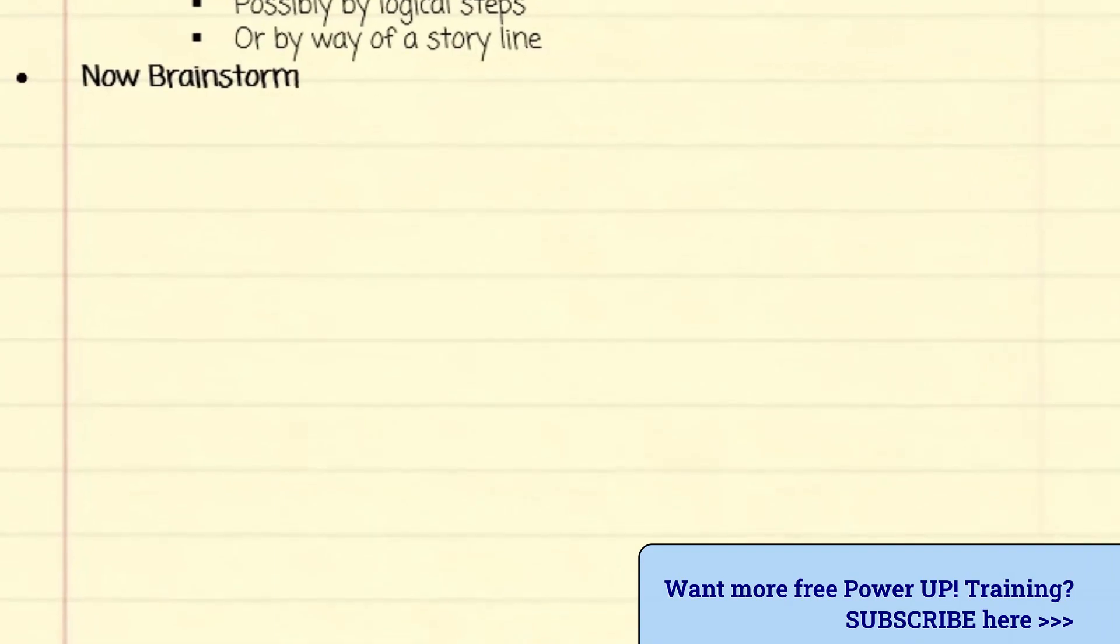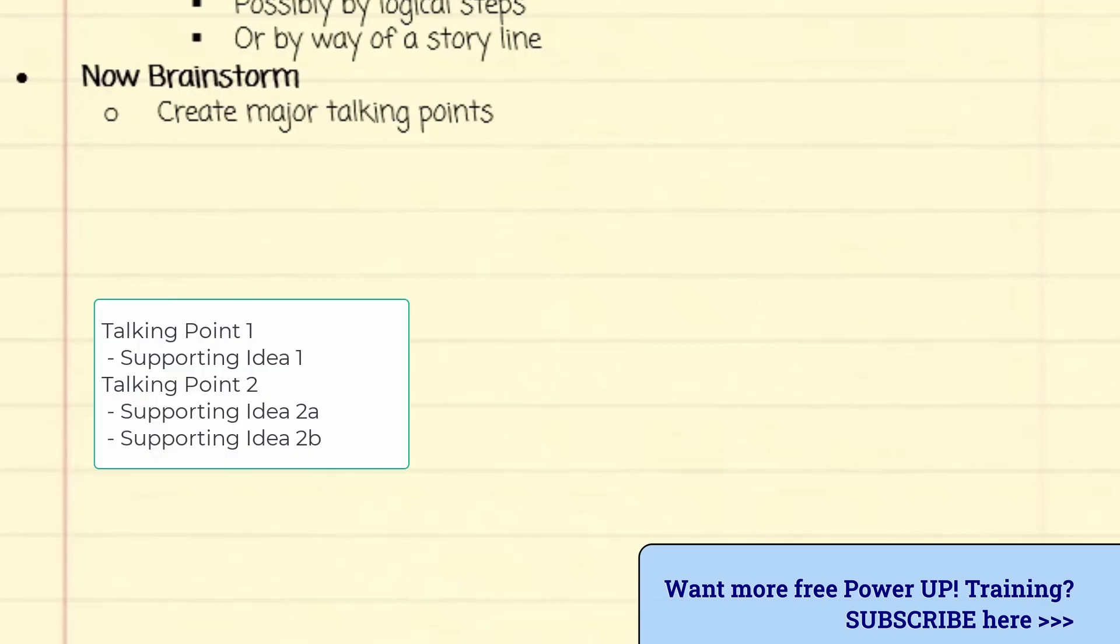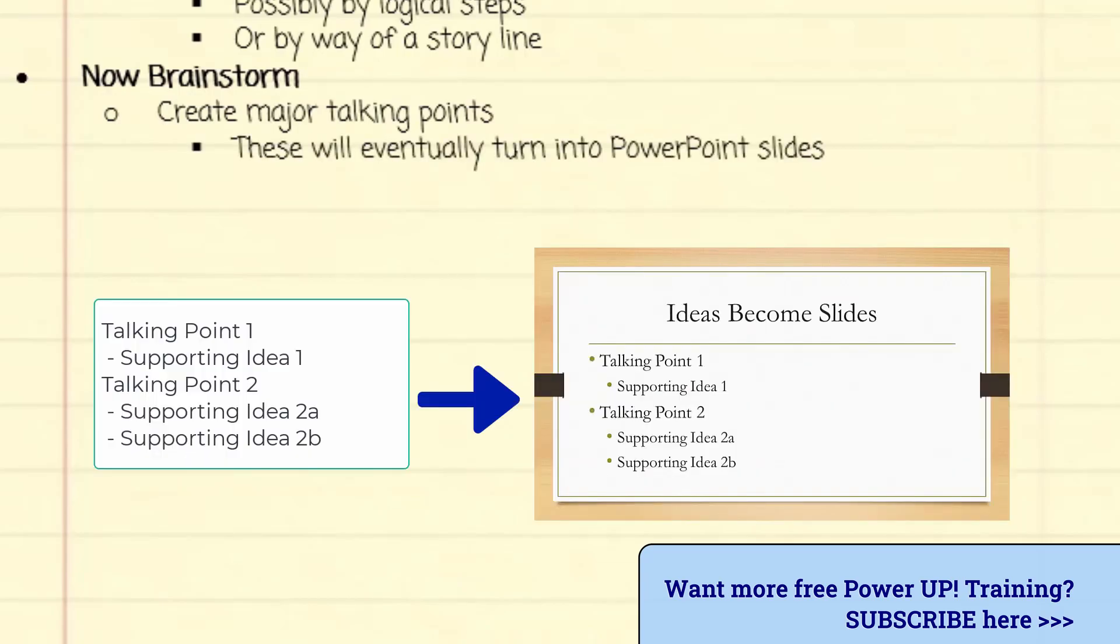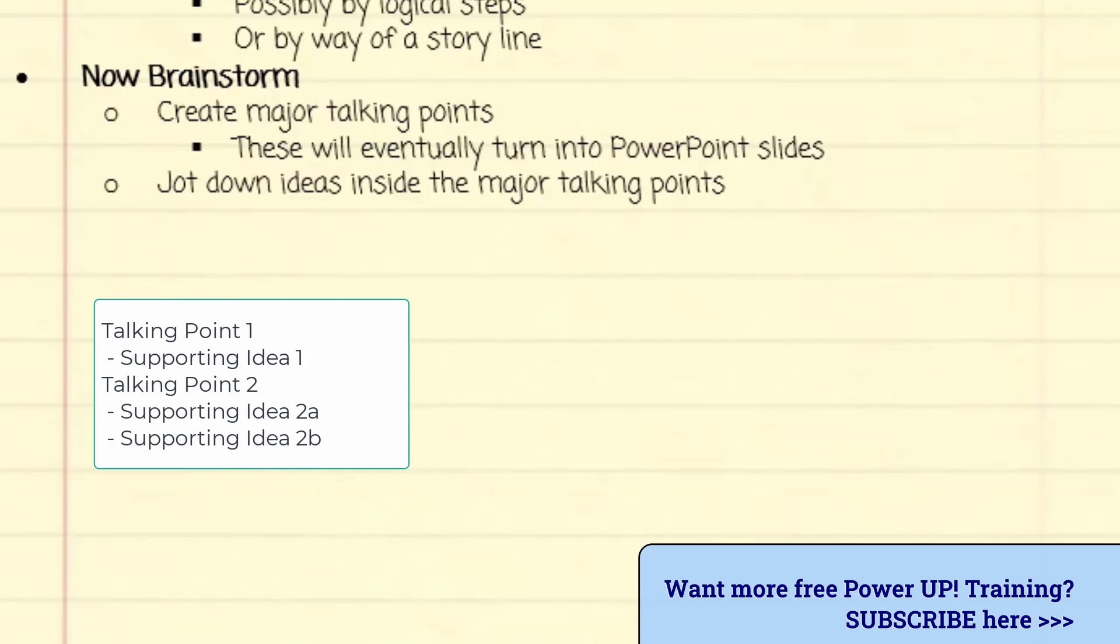Once you've established a strategy, you can begin to hang the details onto the outline. Your talking points eventually turn into PowerPoint slides, but don't worry about PowerPoint at the moment. You really just want to jot down your ideas as quickly as possible and organize them after you finish with your brainstorming session.